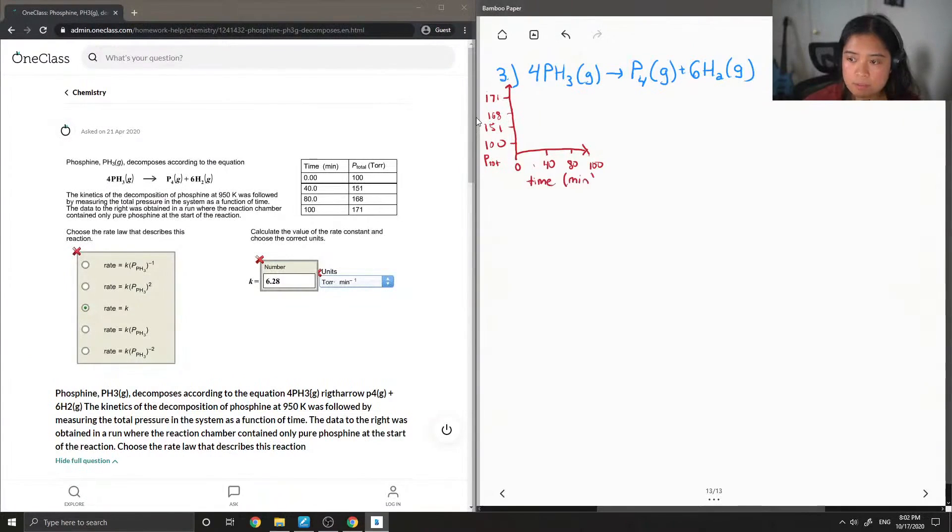And then if I were to plot these values, so 0 and 100, 40, 151, 80, 168, we can see that there is a linear expression that occurs. And when you have a straight line going up, this means this is a first-order reaction.